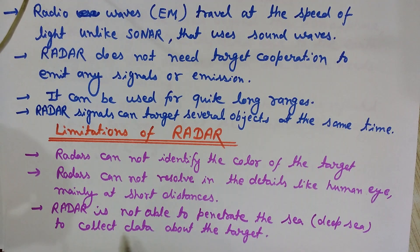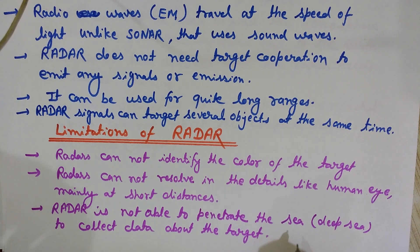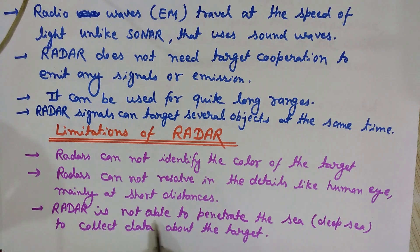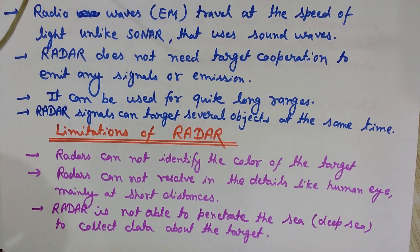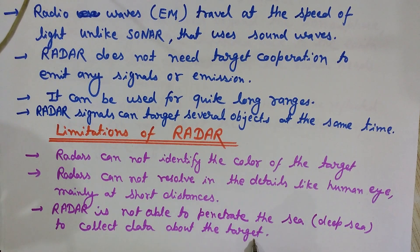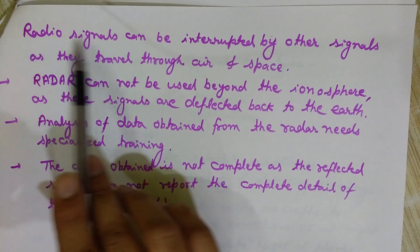Radar is not able to penetrate deep sea to collect data about targets. We use sonar to locate objects found in the sea because radar cannot penetrate deep levels of the sea, and we cannot analyze underwater data accurately with radar.